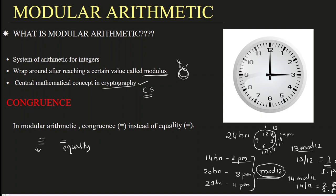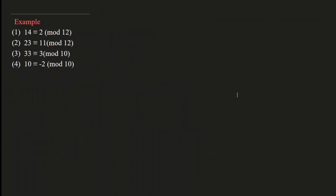Why is equality not sufficient for modular arithmetic? Let us see this question by taking some examples. The difference between congruence and equality — congruence and equality are different. Because congruence and equality are different, we need a different symbol.